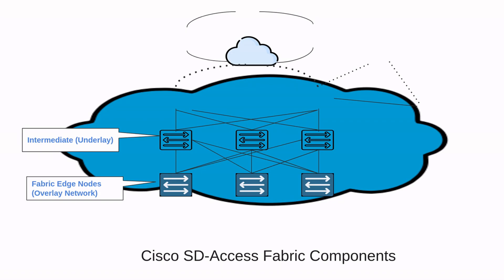There are two different ways to deploy this. One is through the CLI or an API, and the other way is to do it in an automated way, which is fully by using the Cisco DNA Center LAN automation feature.